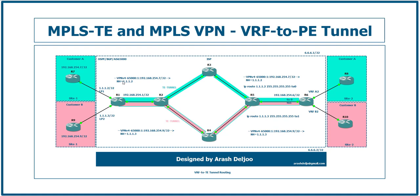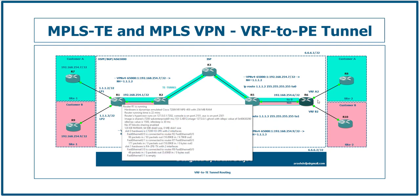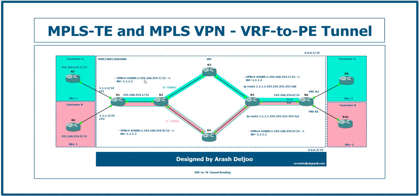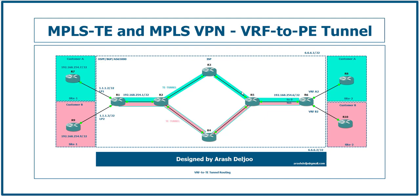This is the method we need. But how can we change the next-hop per VRF? We need to perform this configuration on both R1 and R6. In the VRF-to-PE tunnel configuration, we are trying to send the traffic of one VRF to one tunnel and another VRF to a different tunnel. This is VRF-to-TE tunnel routing. Let me configure this scenario so we can better understand the concept and configuration details.